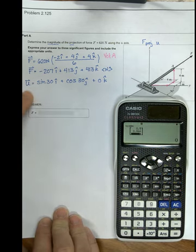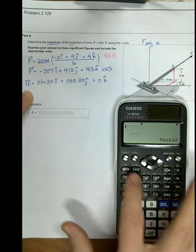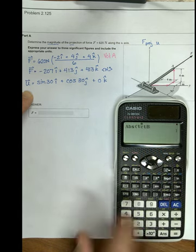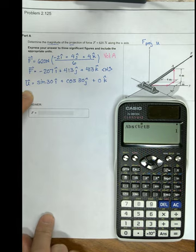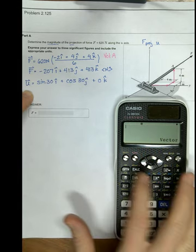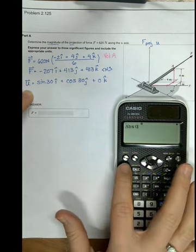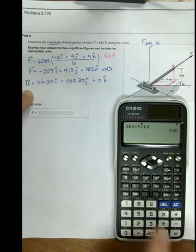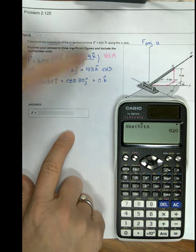So if I want to confirm that this is a unit vector, I can use the absolute value of vector B and confirm that it's got a magnitude of 1. I could do the same thing where I confirm that the absolute value of vector A is 620, same as our magnitude.